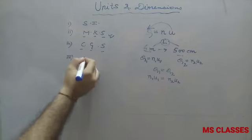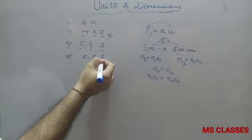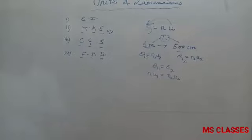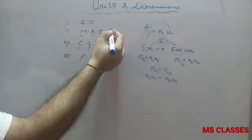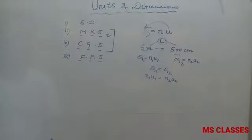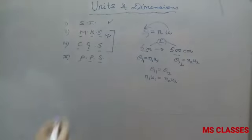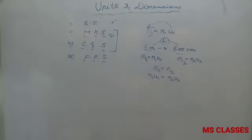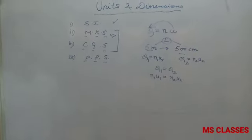And the fourth is FPS, which is foot-pound-second. In India, we generally prefer MKS and CGS, and SI is accepted throughout the globe including India also.